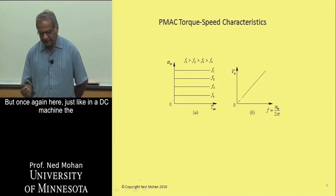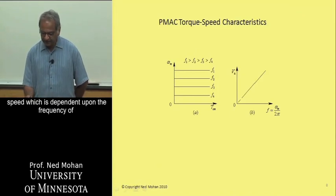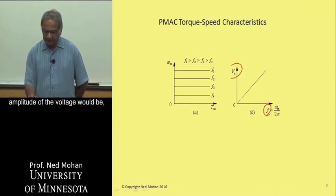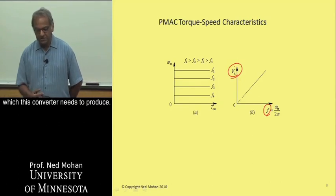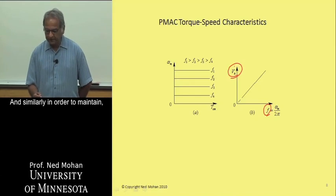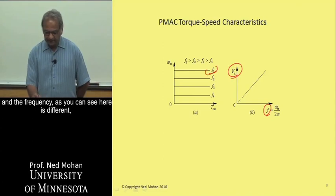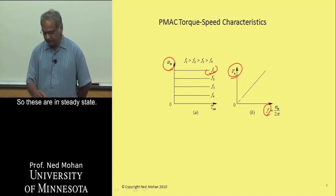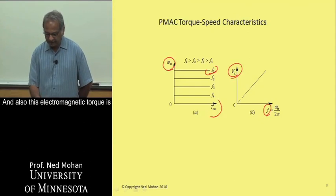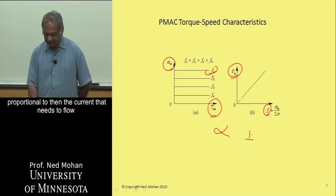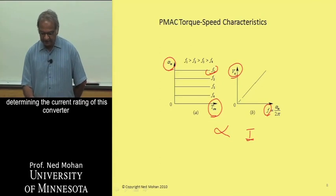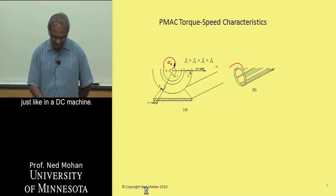But once again here, just like in a DC machine, the speed which is dependent upon the frequency of voltages and currents determines what the amplitude of the voltage would be, which this converter needs to produce. And similarly, in order to maintain, and the frequency, as you can see here, is being determined by, frequency actually determines speed. And so these are in steady state. And also this electromagnetic torque is proportional to then the current that needs to flow through this converter. So the electromagnetic torque then ends up determining the current rating of this converter, just like in a DC machine.